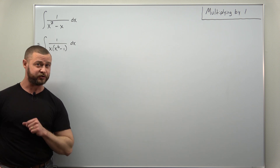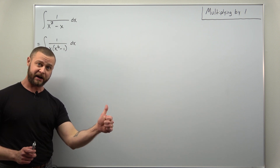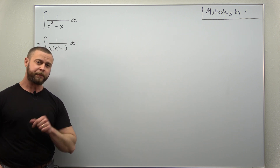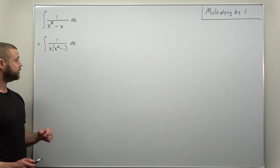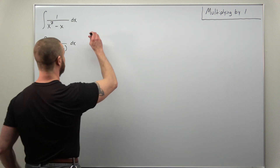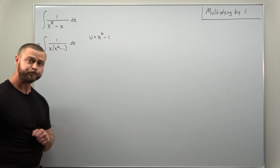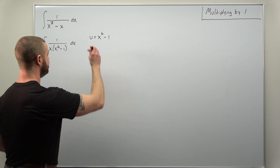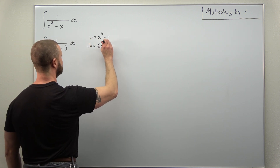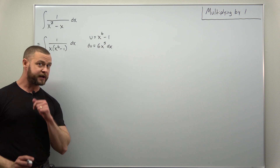We're going to try to use a substitution. Keep in mind whenever you use an algebraic trick like adding zero or multiplying by one, you can usually figure out how to do that from a substitution. So let's try u equals what's in parentheses: x⁶ minus one. Let's calculate the differential — the derivative du comes out to 6x⁵ dx. And this is where initially you might give up trying a substitution.